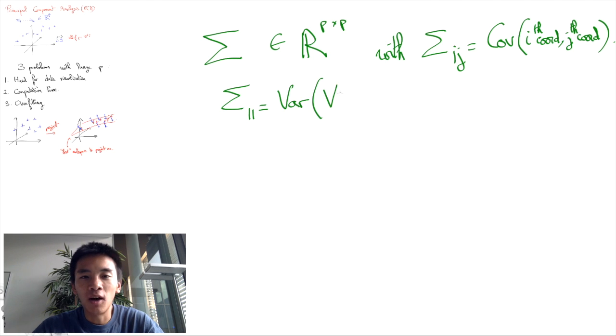This can be computed by the estimator, the classic estimator, 1 over n minus 1 times the sum over k of (xk,1 minus the average of all the x_something,1) squared. This is the basic formula to compute variance.